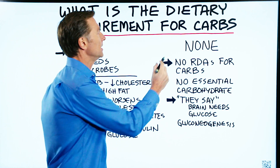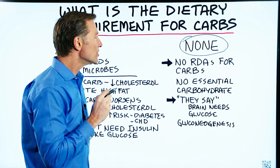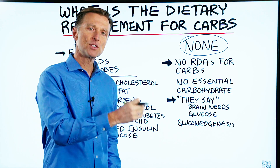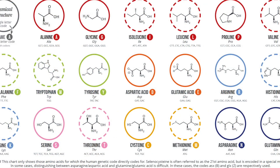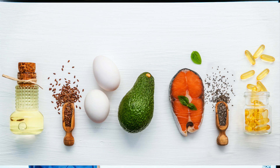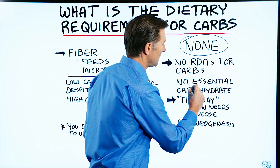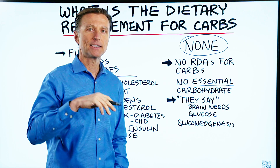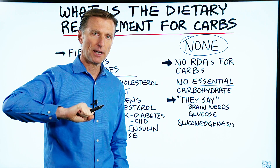The requirement is that there isn't any — there's none. There is no RDA for carbohydrates. There is no such thing as an essential carbohydrate. There are essential amino acids and essential fatty acids, but no essential carbohydrates. In this definition, essential means that your body can't make it — it needs to get it from the diet.